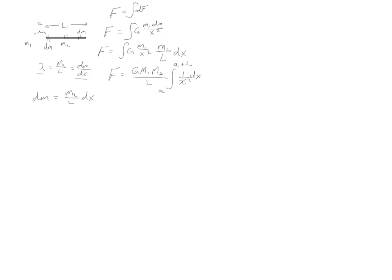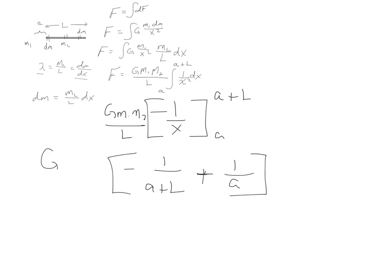The integral of 1 over x squared is negative 1 over x. And we still have our constants. And we are evaluating this between a and a plus L. So, what we do is we just plug those values in, subtract them. So, we have 1 over a plus L, and that's negative, and then minus the beginning parameter. So, minus a negative is a plus, and it's 1 over a. Still multiplied by our constants.